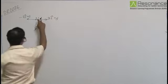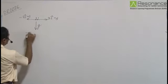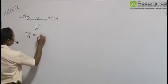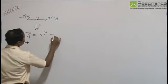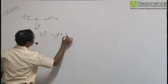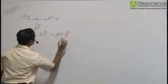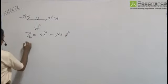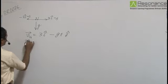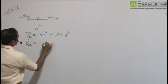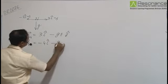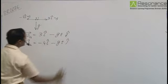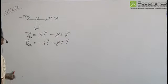Now, at any time, velocity vector of 1 is equal to 3 i cap minus gt j cap. This is velocity of 1 with respect to ground. Velocity of 2 with respect to ground is minus 4 i cap minus gt j cap.